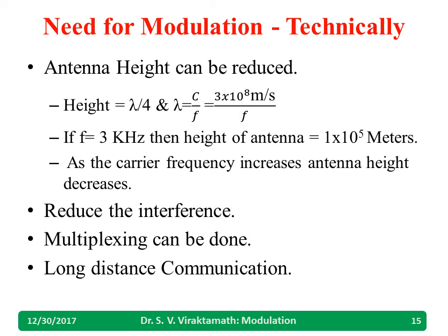Technically speaking, one need for modulation is to reduce the antenna height. The rule is that antenna height should be equal to lambda divided by 4. For a transmitted frequency F, the antenna height equals 3 × 10⁸ divided by the frequency. If you consider 3 kHz as the transmitting frequency, the antenna height comes to approximately 1 × 10⁵ meters, which is very difficult to build. As the carrier frequency increases, the antenna height decreases — hence we use higher carrier frequencies.